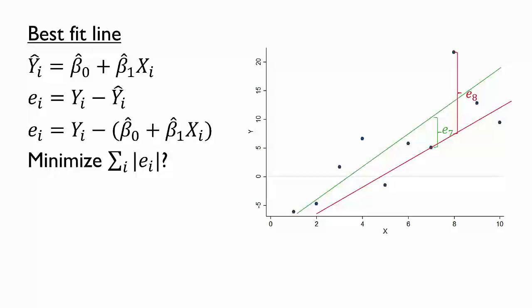A closely related alternative is to minimize the sum of the squared residuals. Like an absolute value, squaring the residuals ensures that the positive and negative residuals do not cancel out. It also penalizes larger residuals more.